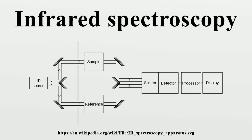Infrared spectroscopy is the spectroscopy that deals with the infrared region of the electromagnetic spectrum — that is light with a longer wavelength and lower frequency than visible light. It covers a range of techniques, mostly based on absorption spectroscopy. As with all spectroscopic techniques, it can be used to identify and study chemicals.